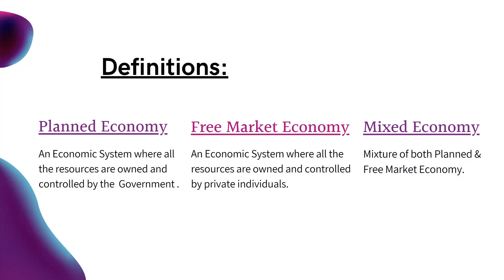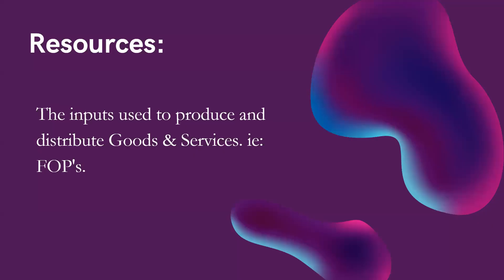On the other hand, mixed economy is a combination of both free market economy and planned economy. In a mixed economy, either the government or the private sector can produce and sell goods or services. Resources are the inputs used to produce and distribute goods and services — these are the factors of production, or FOPs. The four factors of production are land, labour, capital, and enterprise.